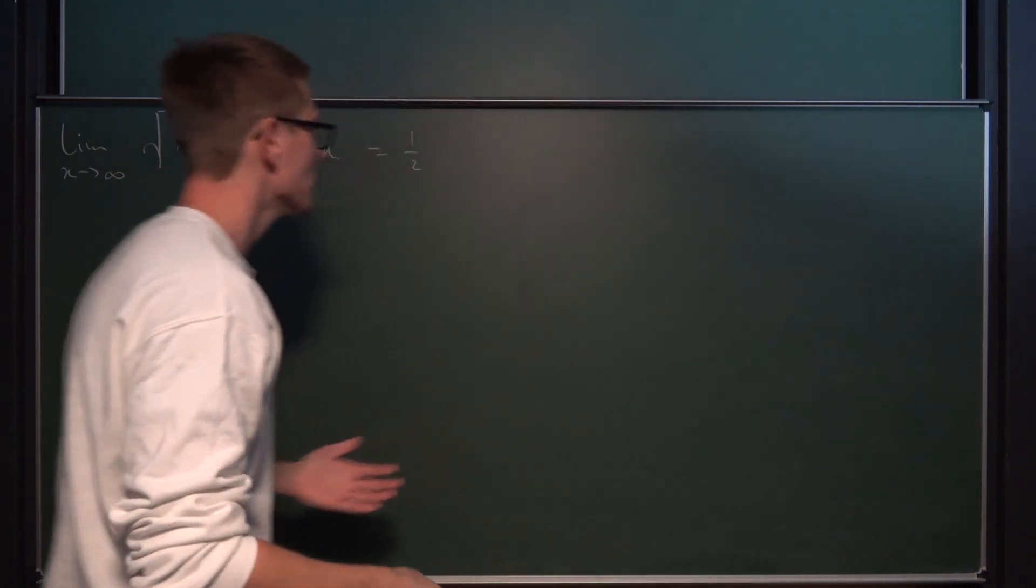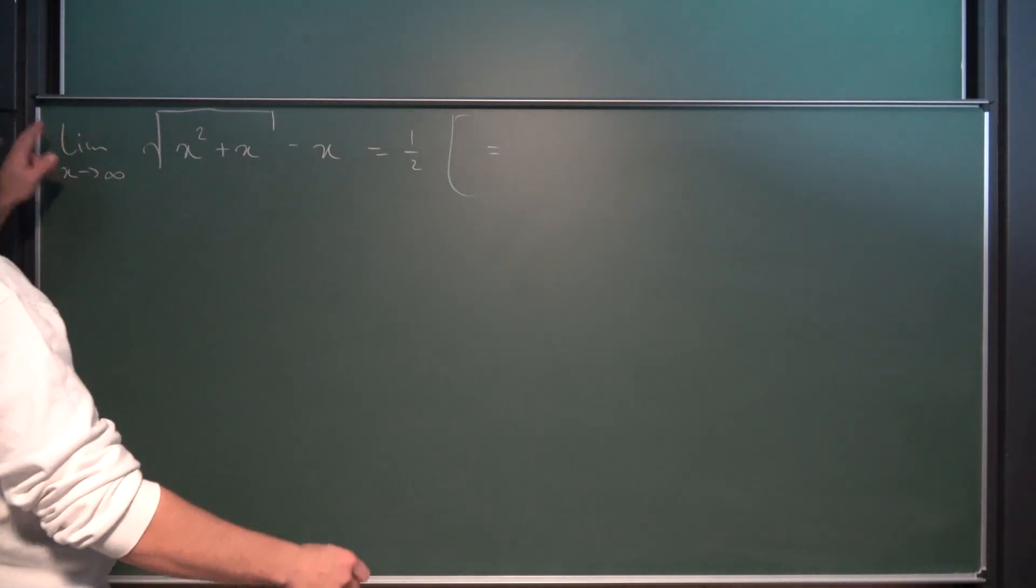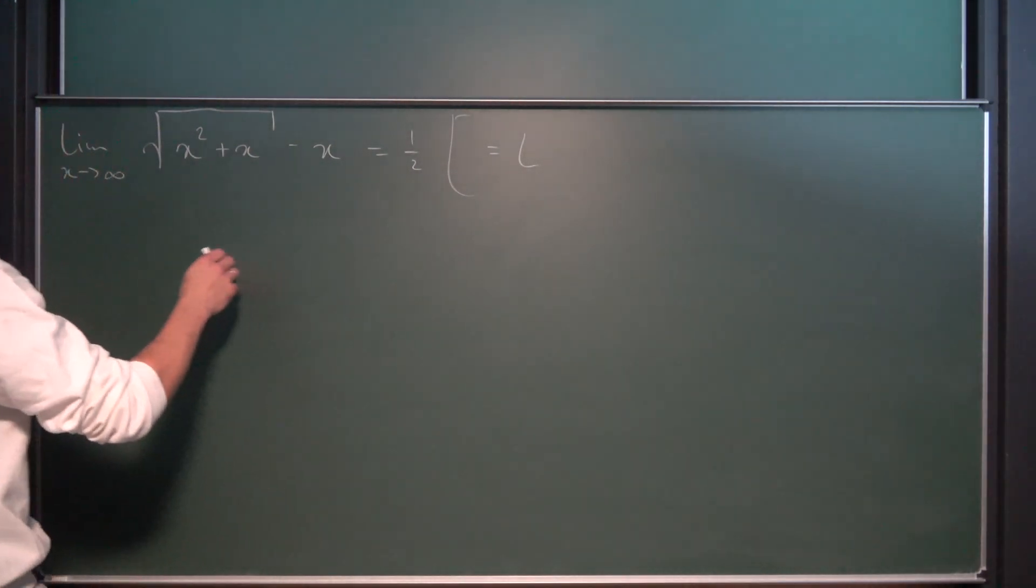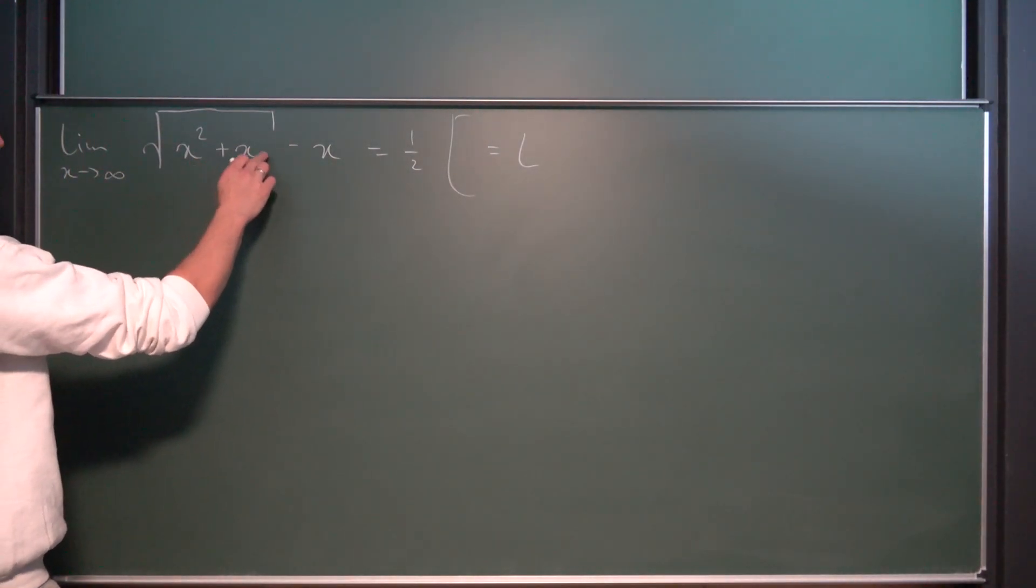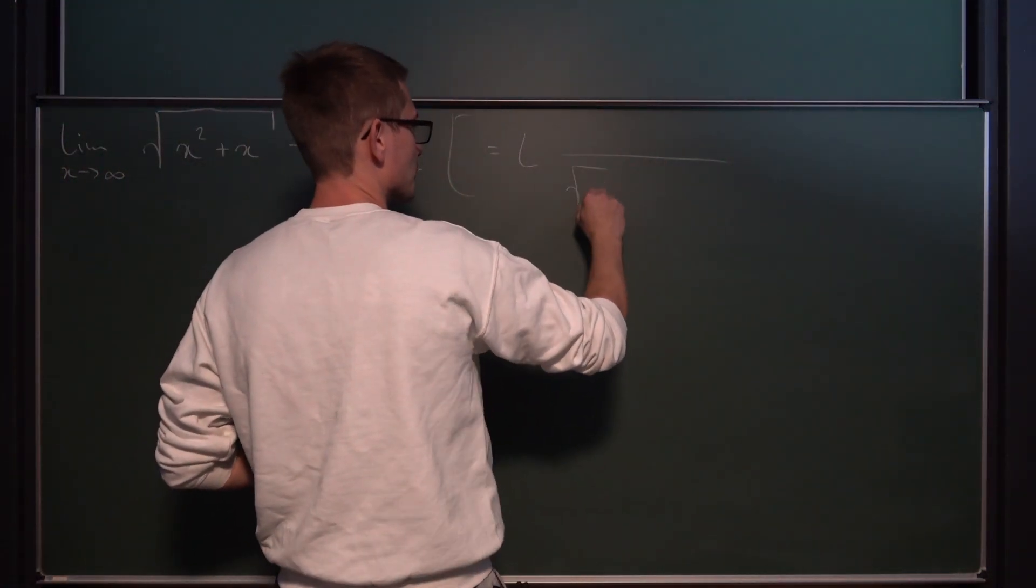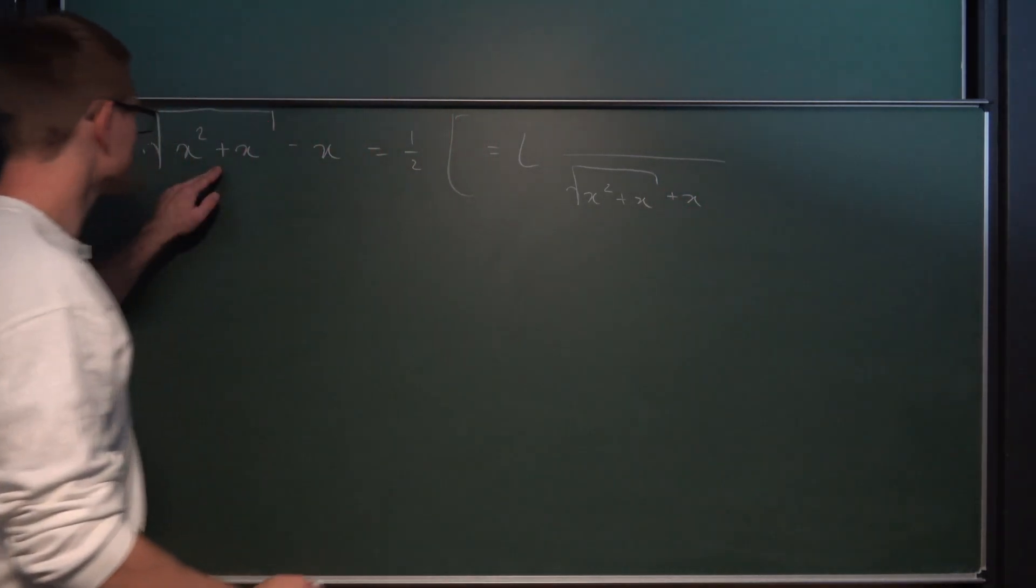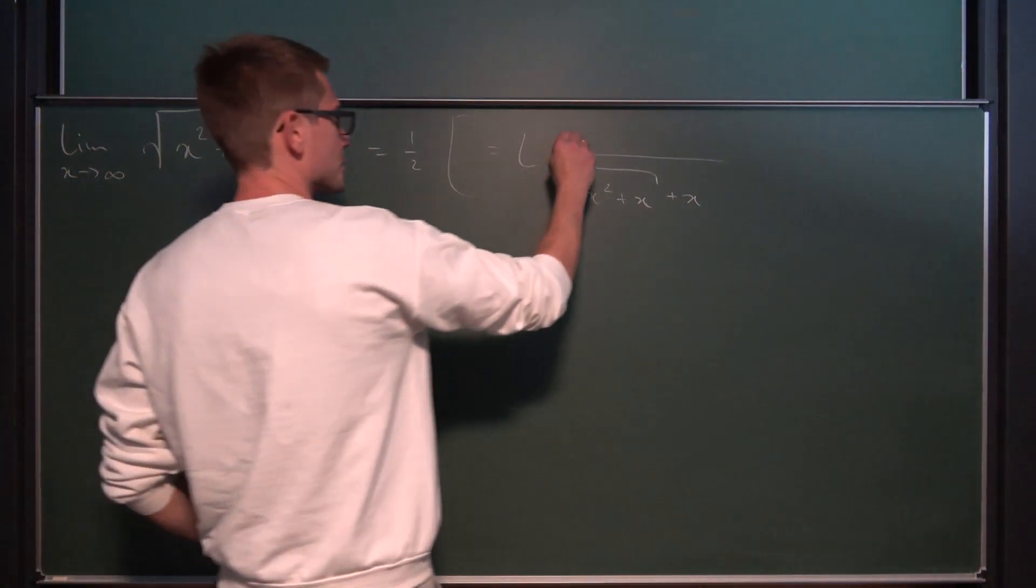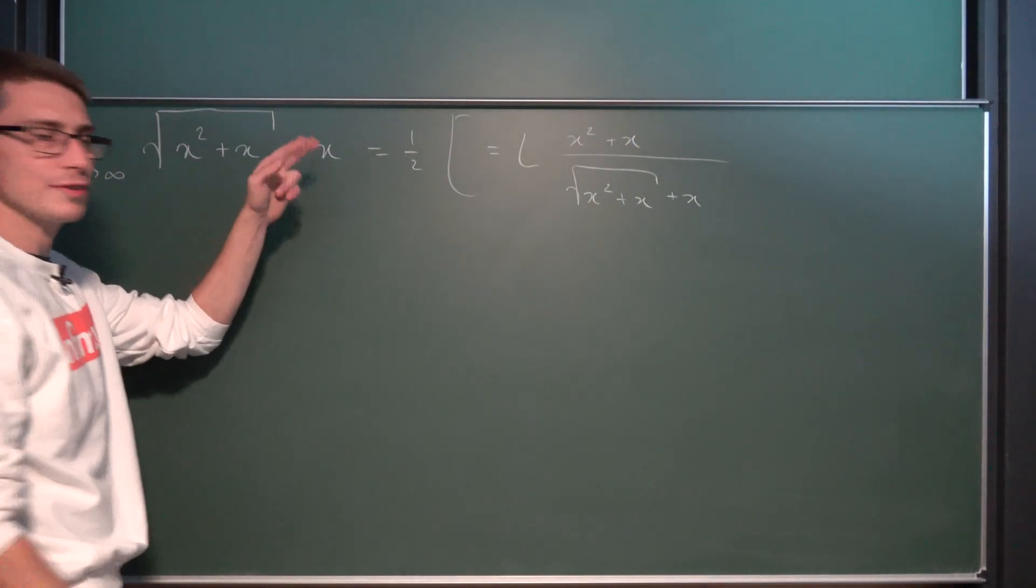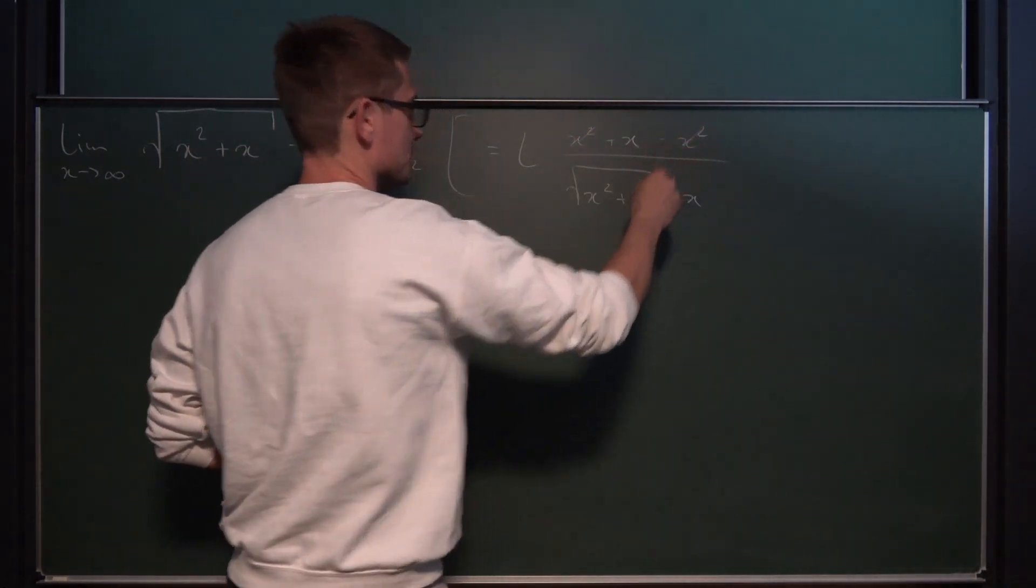Just by squaring this expression doesn't work out because it's a limit. All we can do is we can change the expression in here equivalently. So the only thing we can really do is expand this by its conjugate. Conjugate meaning with the square root of x squared plus x plus x. Resulting in a numerator being just a difference of two squares. So this is just a standard thing you can do.